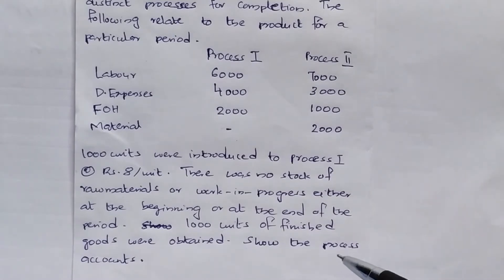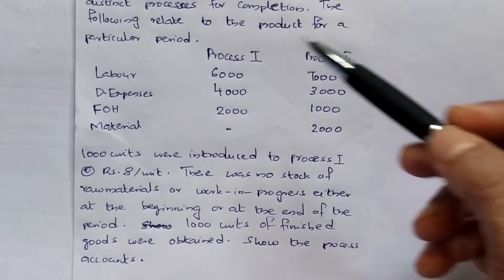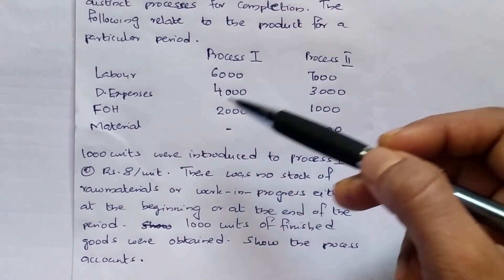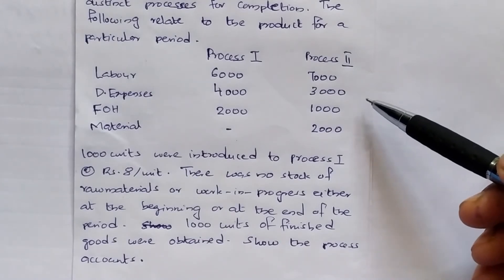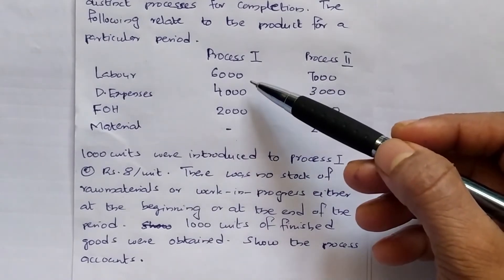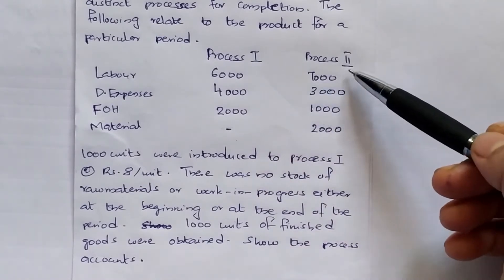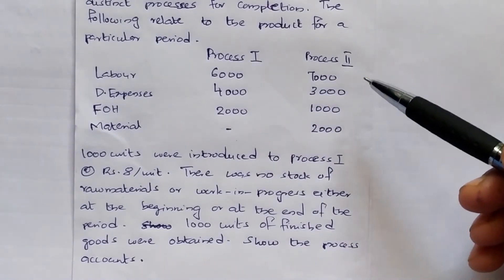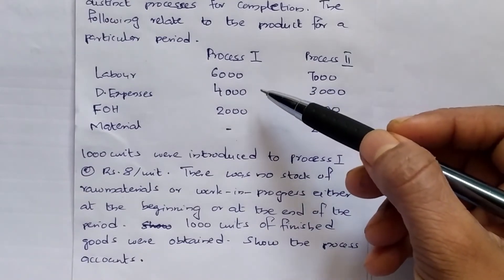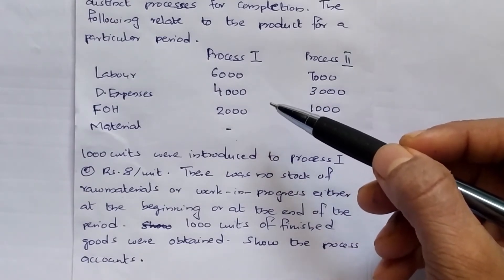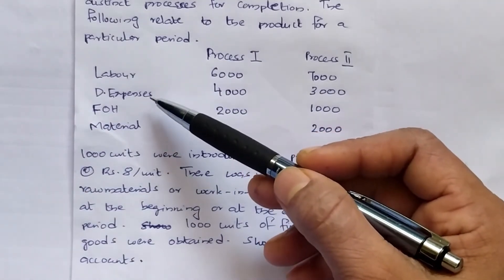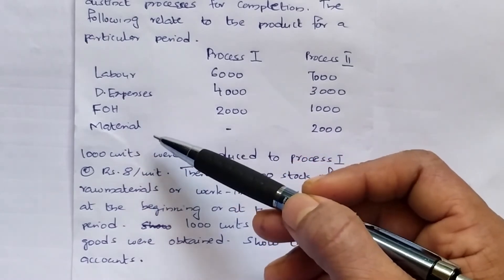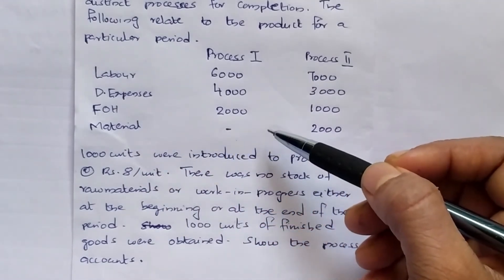For this particular product, manufacturing runs through Process 1 and Process 2. Raw materials go through Process 1 and Process 2 to become the finished product. In each process account, we record items such as labor, direct expenses, factory overhead, and materials.